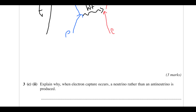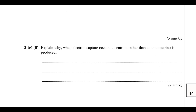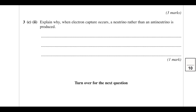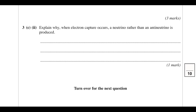Passage of time runs left to right on the diagram. Explain why when electron capture occurs a neutrino — rather than an anti-neutrino — is produced. The reason is to conserve electron-lepton number.